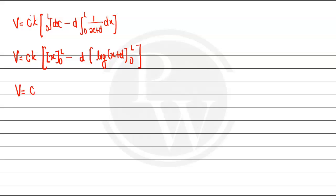V is going to be CK times L minus 0 minus D times log of L plus D minus log D, and the limit is applied.